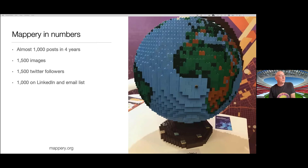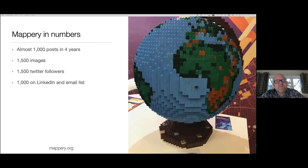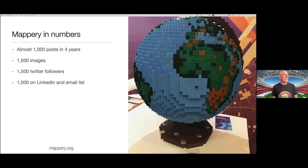A few numbers about the project: we just had our fourth birthday, so we kept going — four years is a long time. We started off at three posts a week, moved up to four, then to five, and Arno and I are now talking about going to seven posts a week. So far we've published 1,500 images. We've got about 1,500 followers on Twitter, about 1,000 on LinkedIn and the email list, as well as people who go straight to the website.